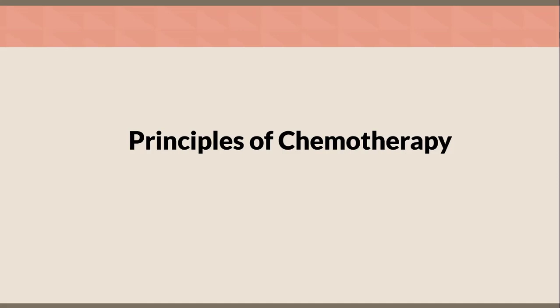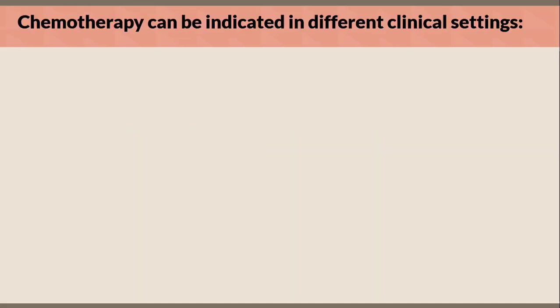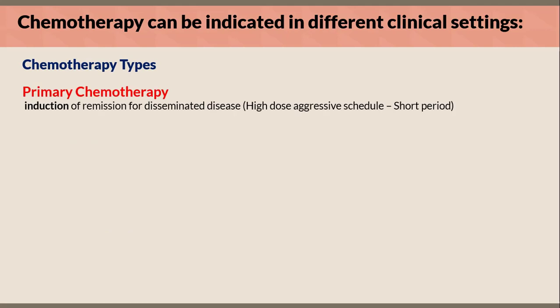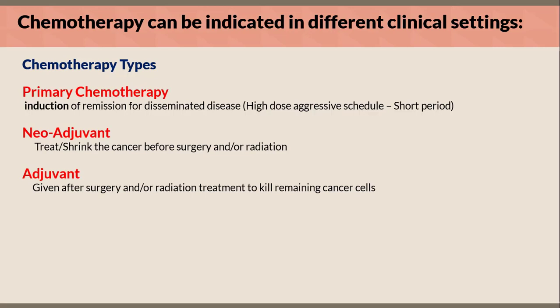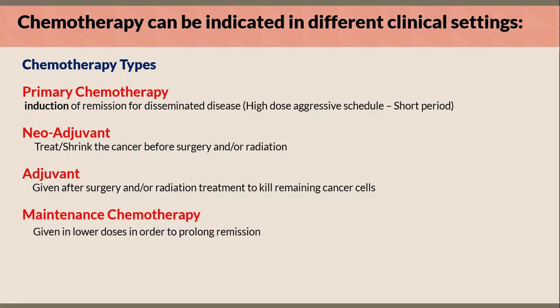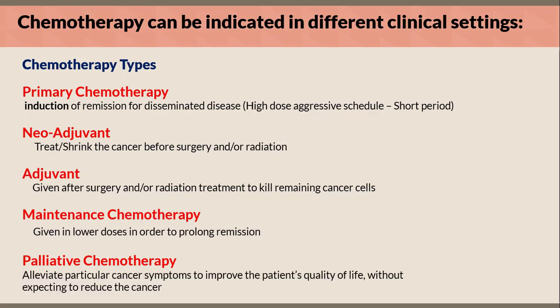Principles of chemotherapy: chemotherapy can be indicated in different clinical settings. First, primary chemotherapy — induction of remission for disseminated disease, high-dose aggressive schedule for a short period. Neoadjuvant — to treat and shrink the cancer before surgery and/or radiation. Adjuvant — given after surgery and/or radiation to kill remaining cancer cells. Maintenance chemotherapy — given in lower doses to prolong remission. Palliative chemotherapy — to alleviate particular cancer symptoms and improve the patient's quality of life without expecting to reduce the cancer.